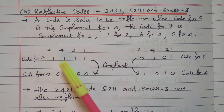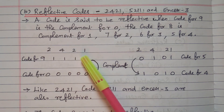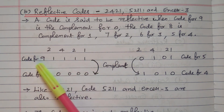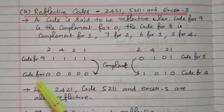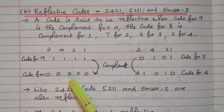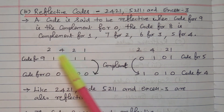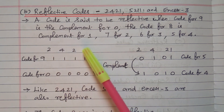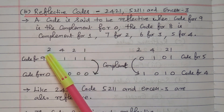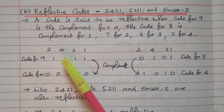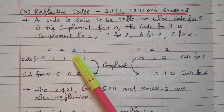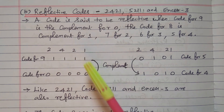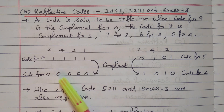We will see one example. We will take 2421. In this, we will find the code for nine and code for zero. Code for zero means all the weightage positions are zero. 2421 is the weightage: first digit weightage is two, second digit weightage is four, third digit weightage is two, fourth digit weightage is one. Here all are zero, so all the weightages are zero.